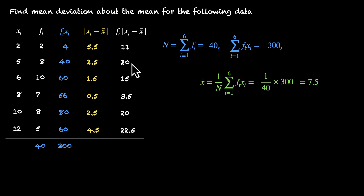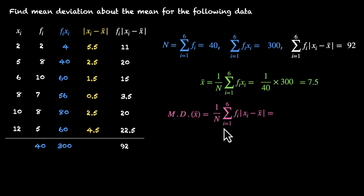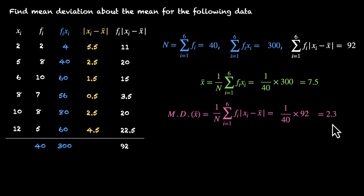Now let's add all of these values: 11 + 20 = 31, + 15 = 46, + 15 = 66, + 20 = 86, + 3.5 = 89.5, + 22.5 = 92. So the sum of Fi·|Xi − X̄| = 92. The mean deviation about the mean is 92 divided by 40, which equals 2.3. So 2.3 is the mean deviation about the mean for this dataset.